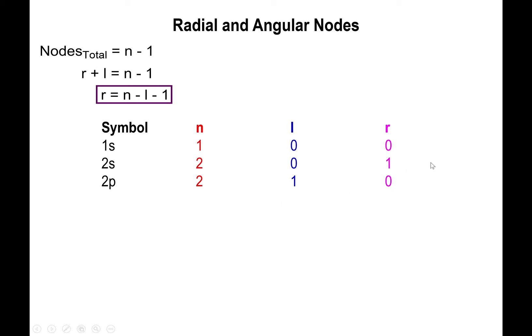At the second energy level we have a total of one node, but the difference is that the s orbital has a radial node whereas the p orbital has an angular node — altogether there is one node at the second energy level. At the third energy level, for the 3s orbital n = 3 and l = 0, yielding 3 - 0 - 1 = 2 radial nodes.